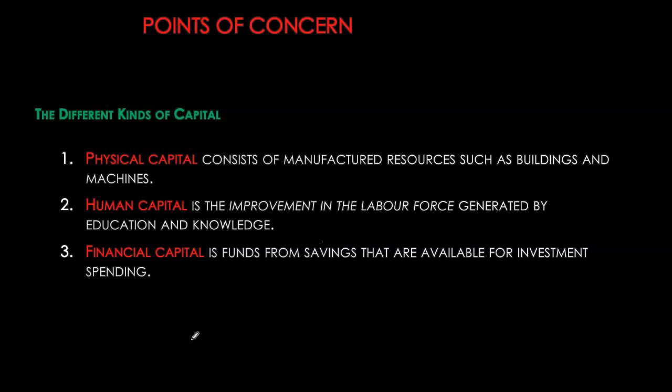The first type is your physical capital stock — this is when businesses spend money on machinery, equipment, factories, software, or any new physical capital stock. Then you have human capital, which refers to improvement in your labor force, generated by education, knowledge, vocational training, or developing the skill set of your labor force. Then we have financial capital, which is our main concern for this chapter.